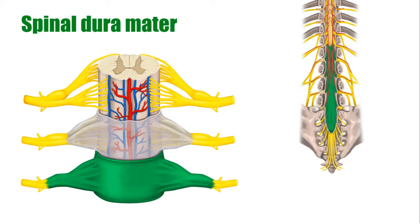The filum terminale is the point at which the spinal cord ends — you could call it a thread of connective tissue. The elongation of the spinal dura mater past the termination of the spinal cord allows for the retrieval of cerebrospinal fluid from this area.